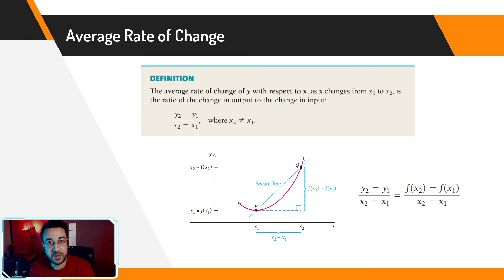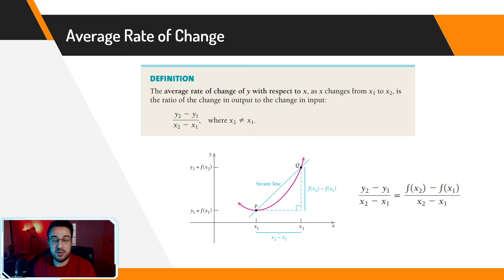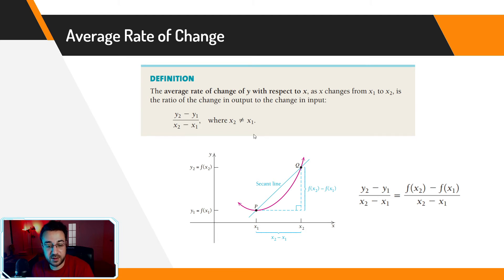The formal definition: the rate of change of y with respect to x — whatever y and x represent in any physical or real-life context — as x changes from x₁ to x₂, is the ratio of change in output to change in input. The average rate of change formula is: (y₂ − y₁) / (x₂ − x₁), with the condition that x₂ must not equal x₁, because dividing by zero is undefined.